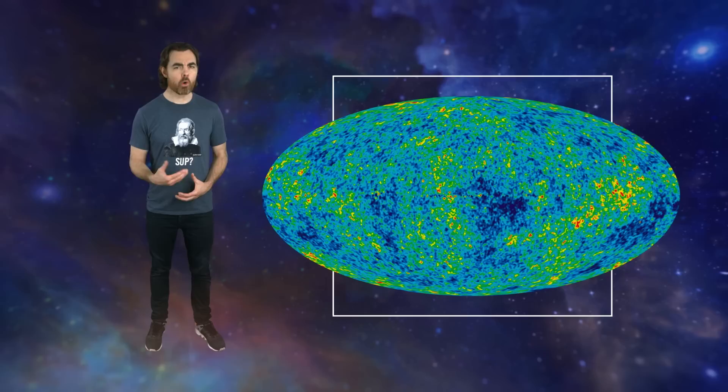These over densities would go on to collapse into the vast clusters of galaxies of the modern universe. So, how can the CMB tell us the Hubble constant? The key is the sizes of those speckles.